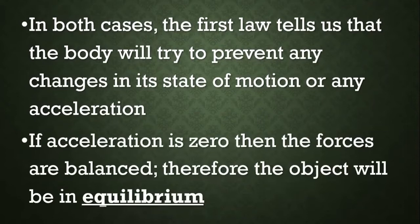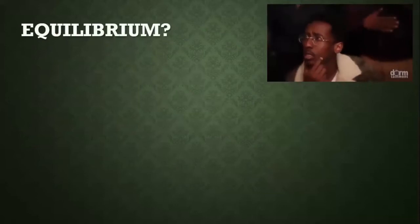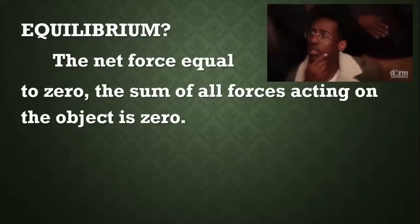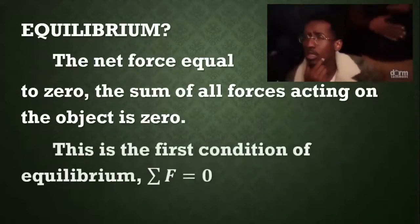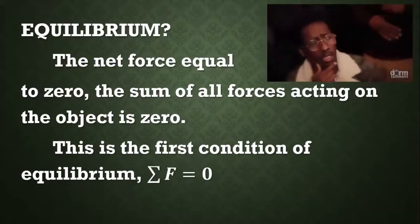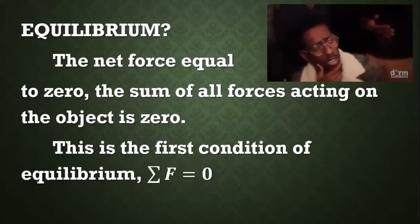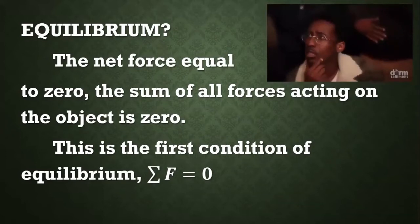If the acceleration is zero, we can see that the forces are balanced, and therefore the object will be in equilibrium. Equilibrium is the summation of all forces, but in this case, all of those forces acting on the object are considered to be zero.